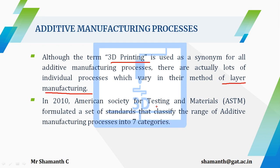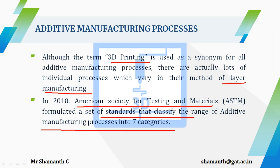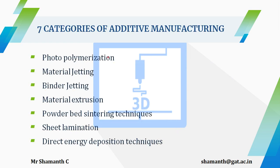What the American Society for Testing and Materials, ASTM, did in 2010 was formulate a set of standards that classify the range of additive manufacturing processes into seven categories, to differentiate between all the methods of processing each part layer by layer. The seven categories of additive manufacturing are: photopolymerization, material jetting, binder jetting, material extrusion, powder bed sintering techniques, sheet lamination, and direct energy deposition techniques.